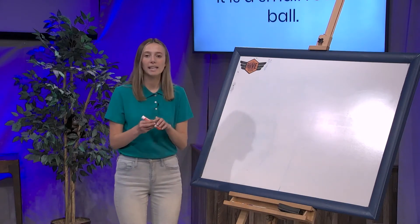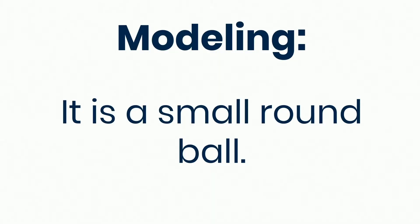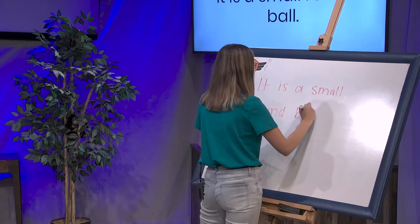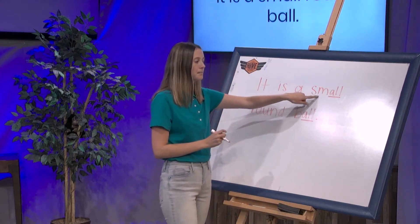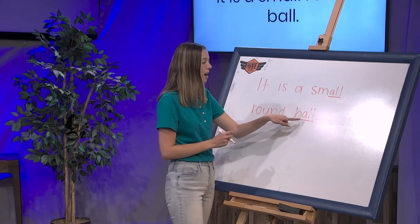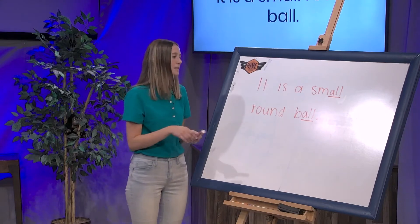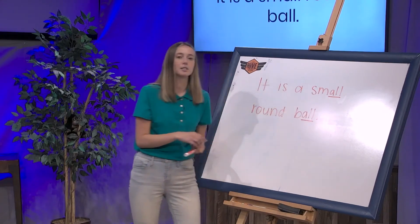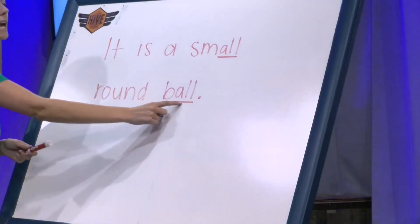Let's write this together: It is a small round ball. I just want you to notice one thing about the spelling — small has two L's, and ball also ends in A-L-L. Do you see how they have the same ending? If a word has that 'all' sound at the end, it usually has A-L-L.